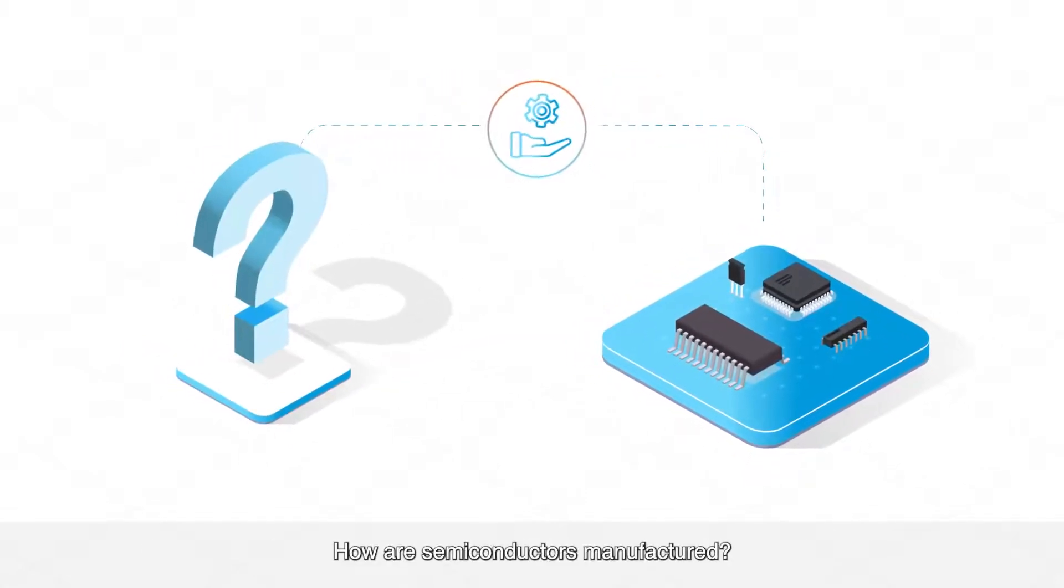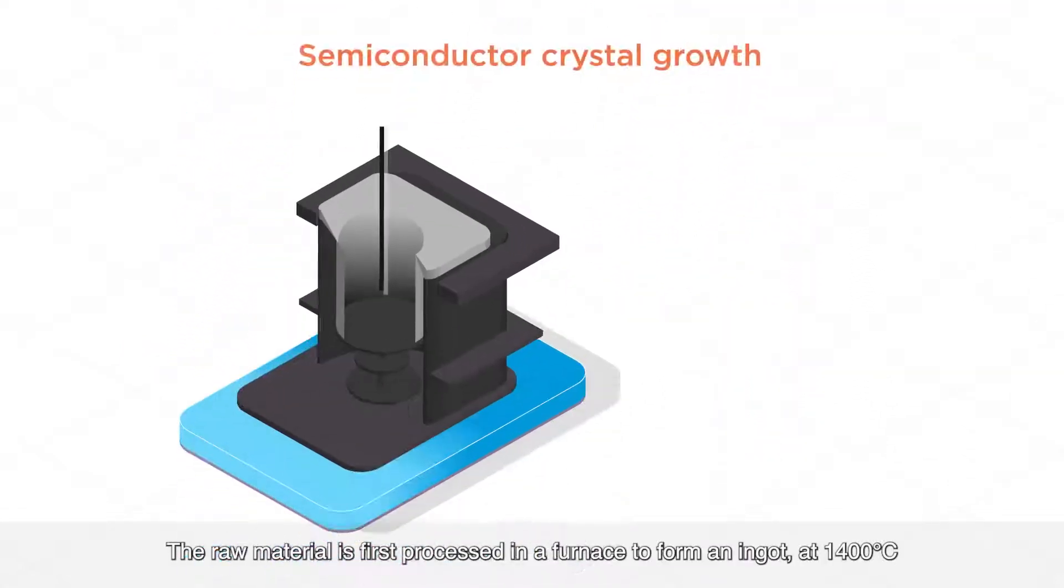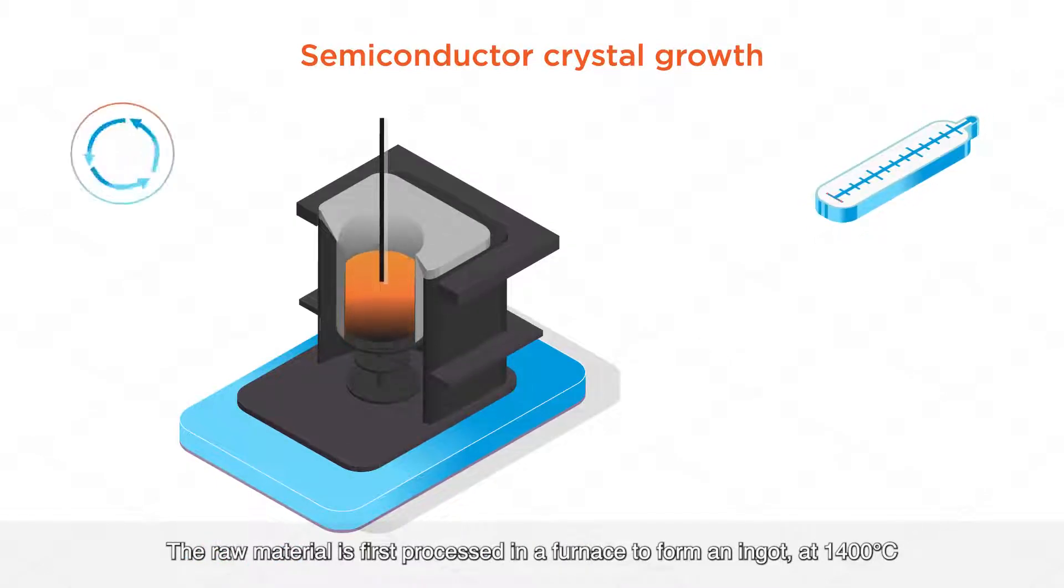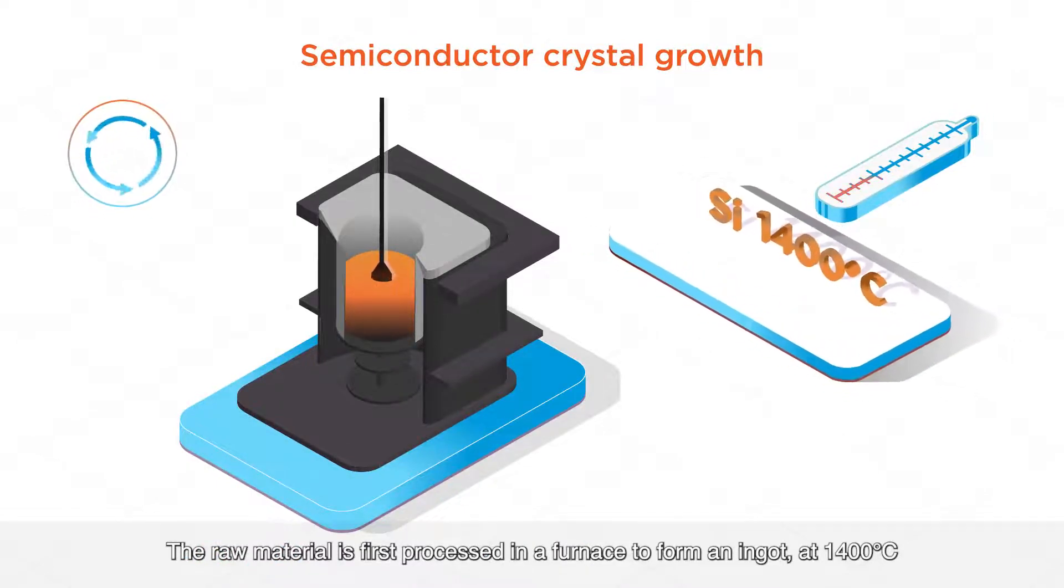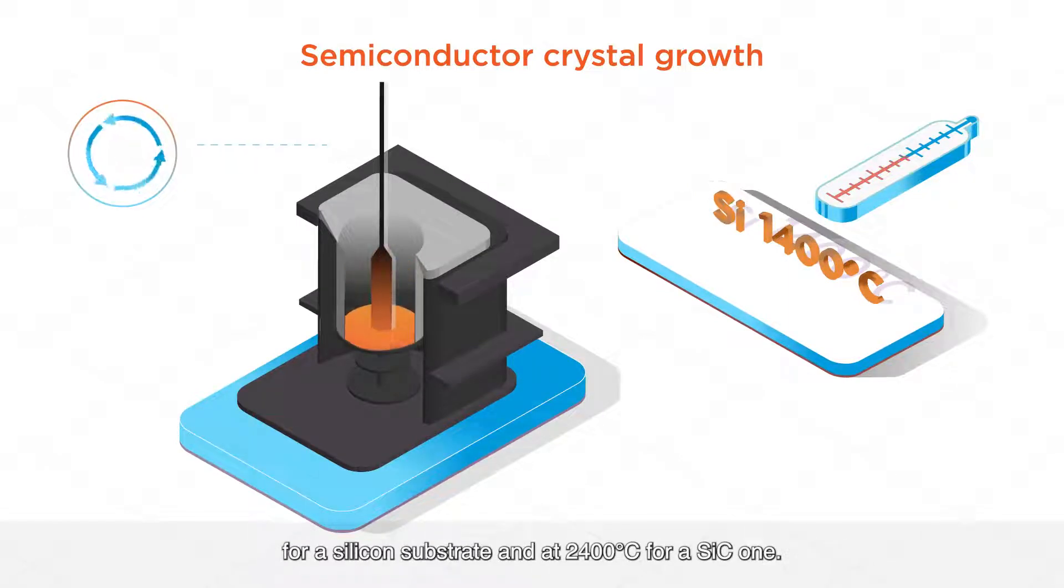How are semiconductors manufactured? The raw material is first processed in a furnace to form an ingot at 1400 degrees Celsius for a silicon substrate and at 2400 degrees Celsius for an SIC one.